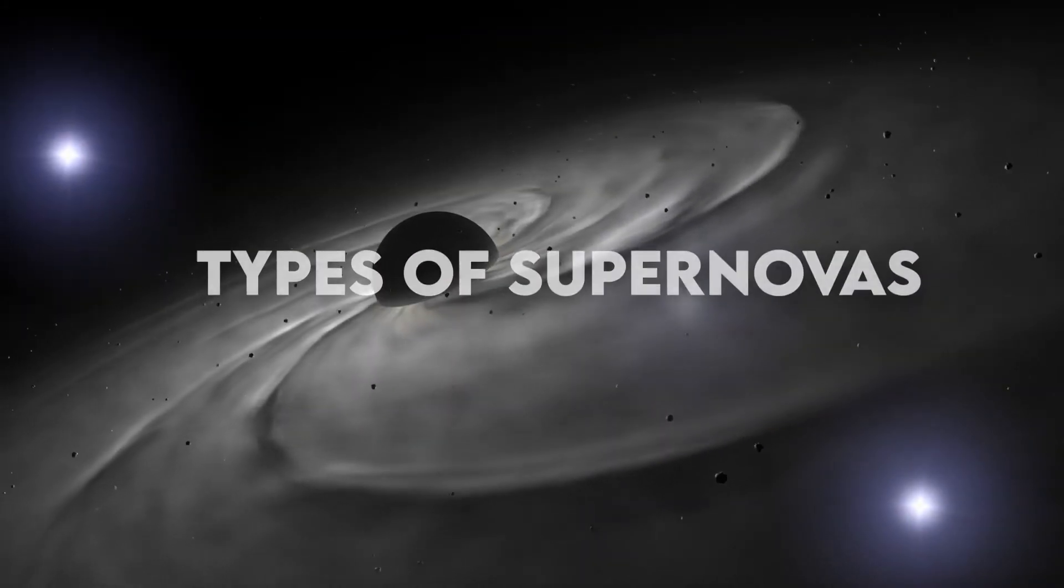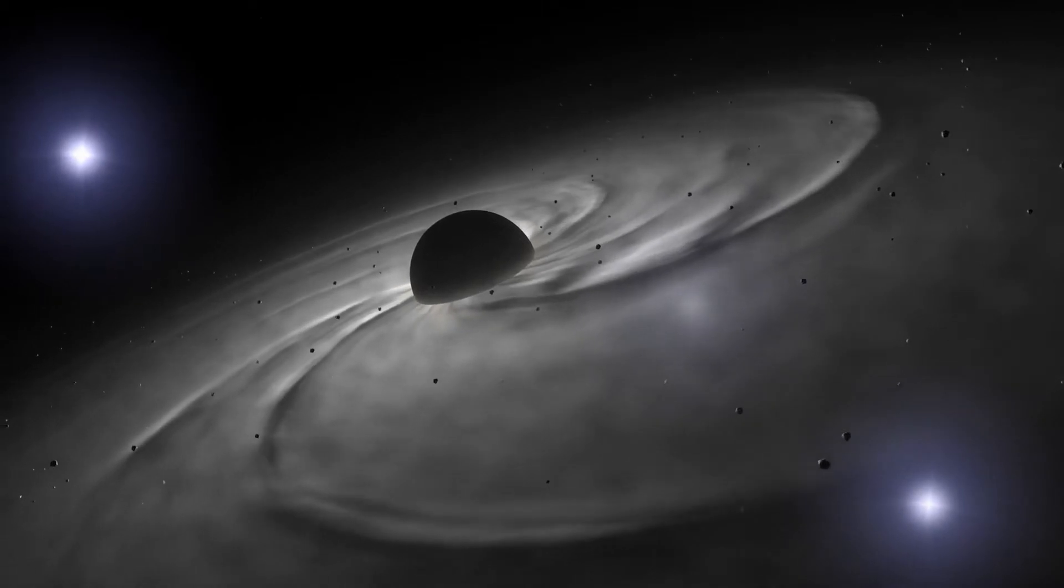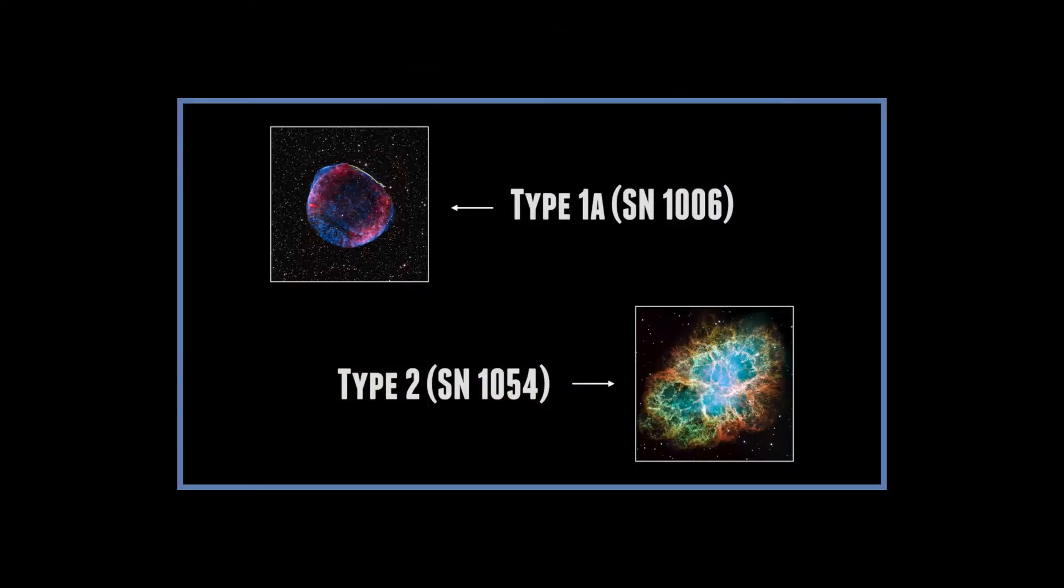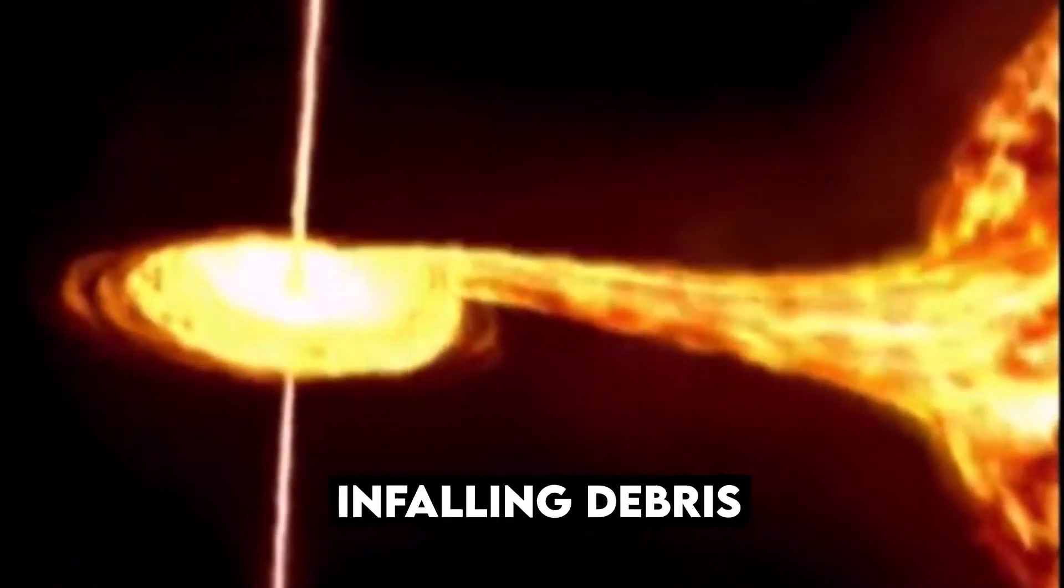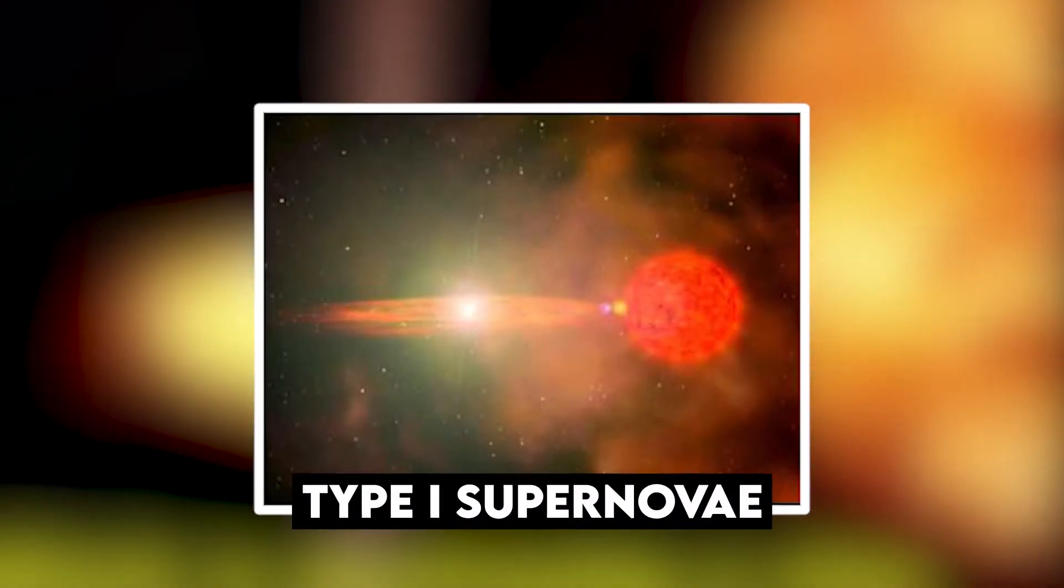Types of supernovas. As we know, supernovas are divided into two types, type 1 supernova and type 2 supernova. When a tiny, dim, white dwarf star collapses due to infalling debris from a partner, a type 1 supernova occurs.